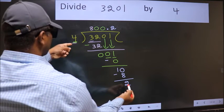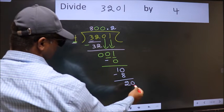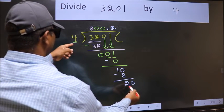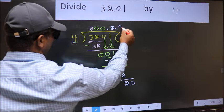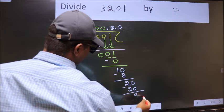2 is smaller than 4. And we already have the decimal. So, directly take 0. So, 20. When do we get 20 in 4 table? 4 fives is 20. Now, we should subtract. We get 0.